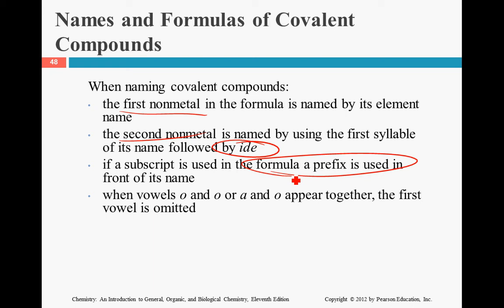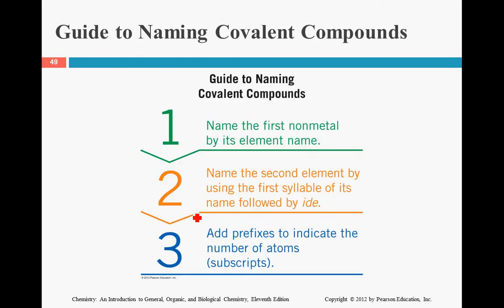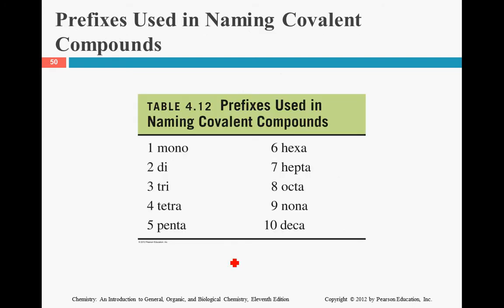When vowels O and O, or A and O appear together, the first vowel is omitted. We'll talk about that in a second. So first, figure out what the first non-metal is, figure out what the second non-metal is — the second one ends in '-ide' — and then figure out the prefixes by determining how many of each atom there are. Here is a list of the prefixes. This is a memorization thing; there's really no way around it.